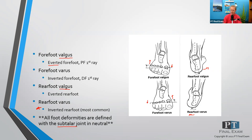So again, forefoot valgus is an eversion of the forefoot. Forefoot varus is an inversion of the forefoot. In my mind, forefoot varus looks a lot like genu varum — kind of the bow-legged look, think of it like a bow-toed look — whereas forefoot valgus is kind of like knock-kneed. Rearfoot valgus and varus follow a very similar trajectory: rearfoot valgus looks a lot like genu valgum where you're knock-kneed, and rearfoot varus looks like genu varum where you have the bow-legged look.